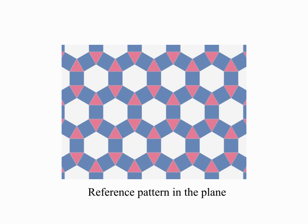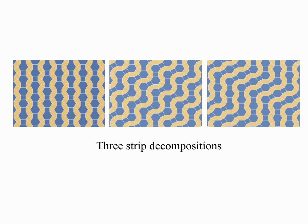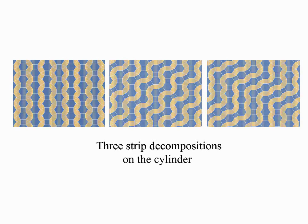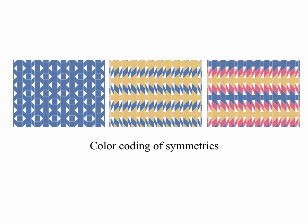We can configure a pattern with different strip decompositions. Here we show three different strip decompositions of the pattern 3464. Different strip decompositions lead to different feasible symmetries, which can be observed when mapping the pattern onto a cylinder. We color code different symmetries.